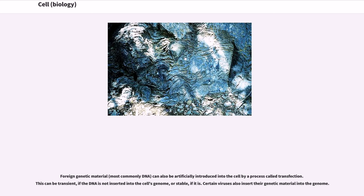Foreign genetic material, most commonly DNA, can also be artificially introduced into the cell by a process called transfection. This can be transient, if the DNA is not inserted into the cell's genome, or stable, if it is. Certain viruses also insert their genetic material into the genome.